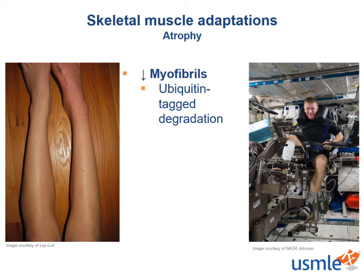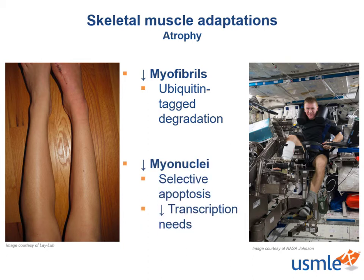With muscle atrophy and loss of protein synthesis, we see a corresponding decrease in the number of myonuclei. Since the muscle fibrils don't have increased transcriptional needs — quite the opposite — we see a reduction in their nuclei thanks to selective apoptosis. However, this doesn't mean your muscles can't hypertrophy, regain mass, and increase those nuclei numbers. Despite atrophy, the muscle fibers keep a reserve of satellite cells ready for next January when we get off the couch and into the gym once again.